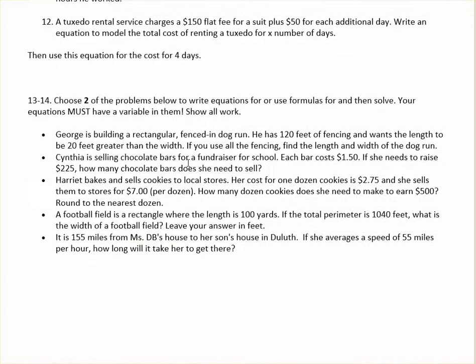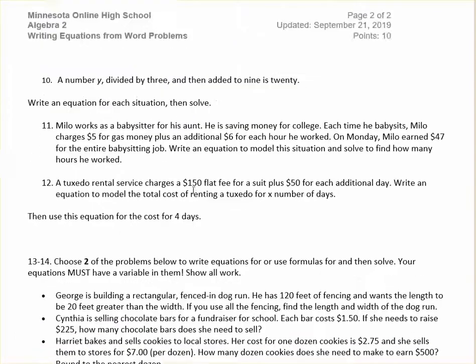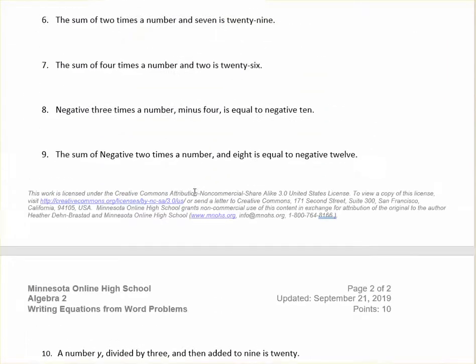Then there's a couple word problems where we'll write an equation and solve. And then in this section here, it says choose any two problems from below to write equations for or use formulas for and then solve. So your equations must have a variable in them and show all work. So these aren't numbered because each bullet here is a new problem that you can pick to solve. So you pick a couple of them, solve them by writing an equation with a variable and then showing your work.